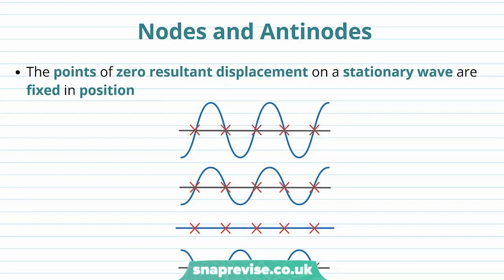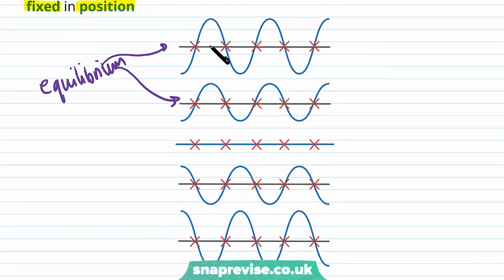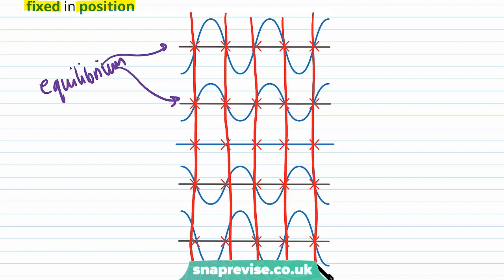We have certain points in a stationary wave with maximum displacement and certain points with zero displacement. These are called nodes and antinodes. The points of zero resultant displacement on a stationary wave are fixed in position — because a stationary wave doesn't move, the points of zero displacement don't move either.